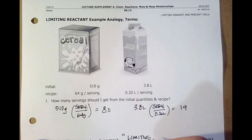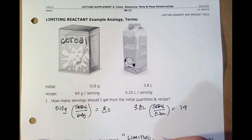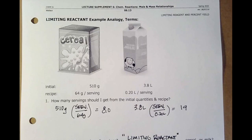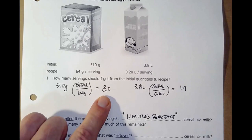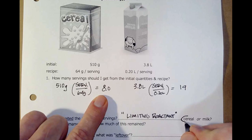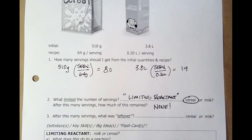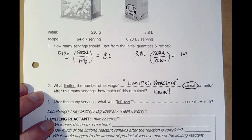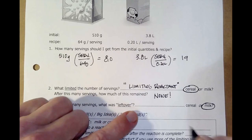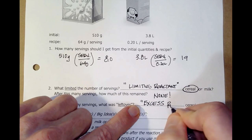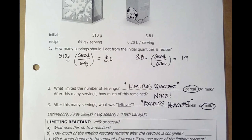And we're going to have a fancy word for that. We're going to call this the limiting reactant. Sometimes we call it the limiting reagent. Well, cereal I ran out after eight servings. Milk, I could have gotten 19 servings if I would have had enough cereal. So cereal is what I ran out of. And so the question is, well, after that many servings, how much cereal remained? None. I used it all up. That's what limited my number of servings. So then the other thing is, if you used up all the cereal, what was left over? Milk. We sometimes call this the excess reactant.